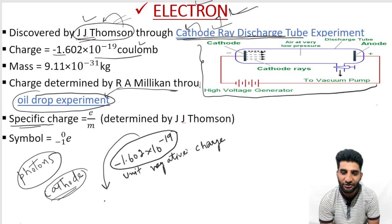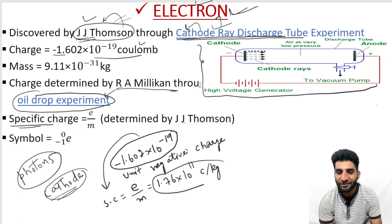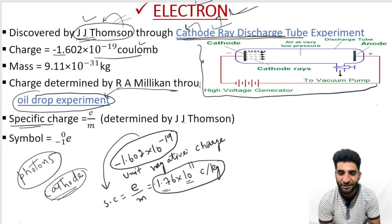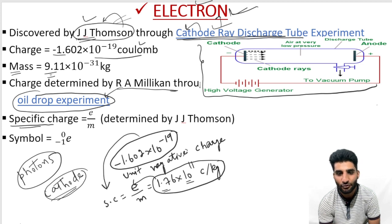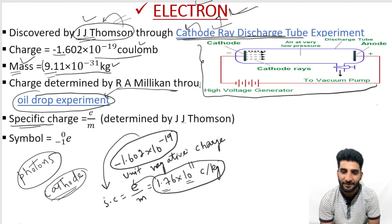The specific charge of the electron is the charge of the electron divided by the mass of the electron. The specific charge of the electron is 1.76 × 10¹¹ coulombs per kilogram. After determining the specific charge, the mass of the electron was calculated. The mass of the electron is 9.11 × 10⁻³¹ kg.